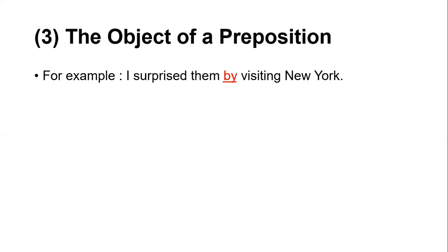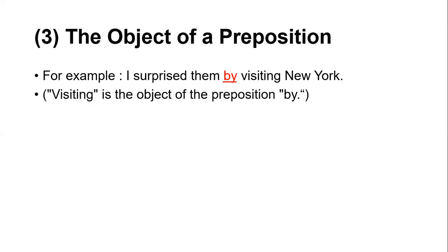The next function: gerund as the object of a preposition. Example: 'I surprised them by visiting New York.' Here 'by' is a preposition, and after it the gerund phrase follows. Visiting is the object of the preposition 'by.' Another example: 'I am thinking of drawing' — drawing is the object of the preposition 'of.'